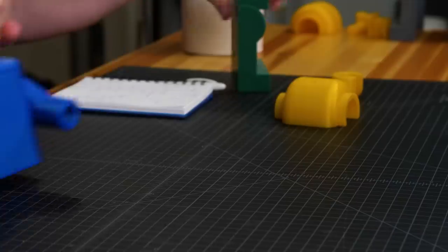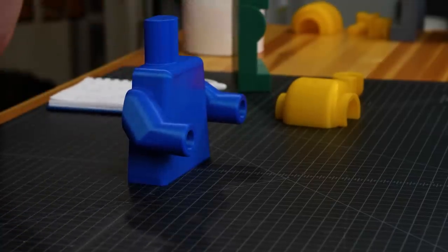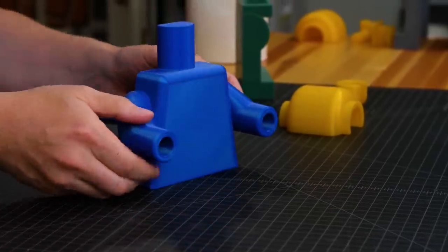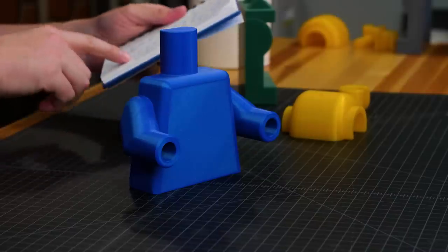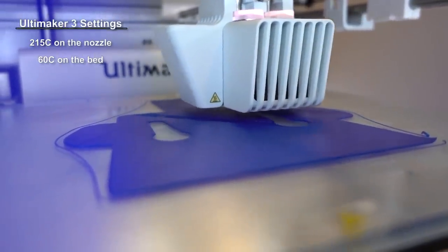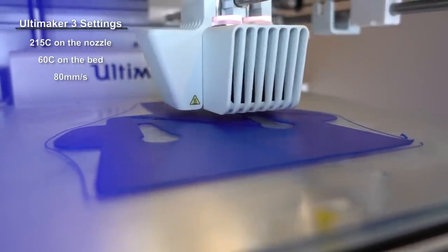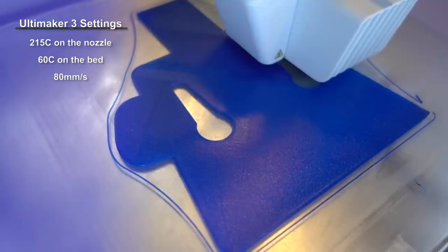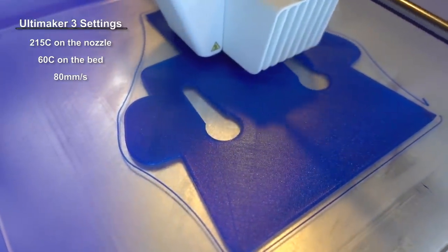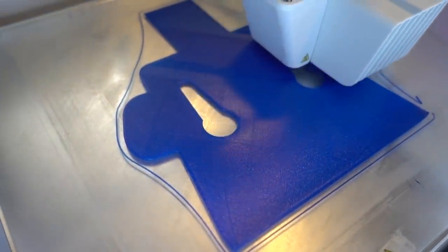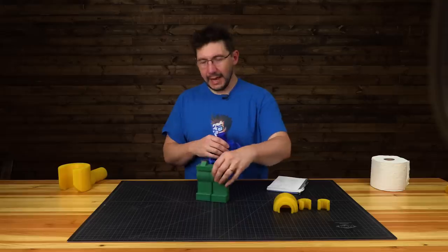The hands themselves, the little Lego claw, are the same: 215, 60°C, 60 millimeters per second, three perimeters, 10%. But the head, the Ultimaker 3 is what blessed us with this print in High Five Blue: 215°C on the nozzle, 60°C on the bed, and according to Cura it was 80 millimeters per second.